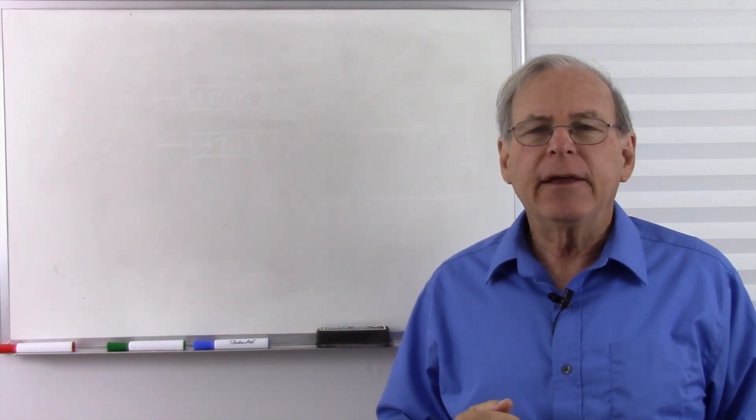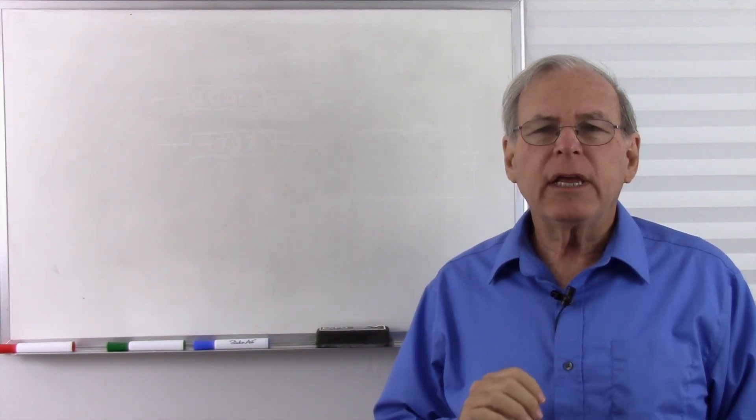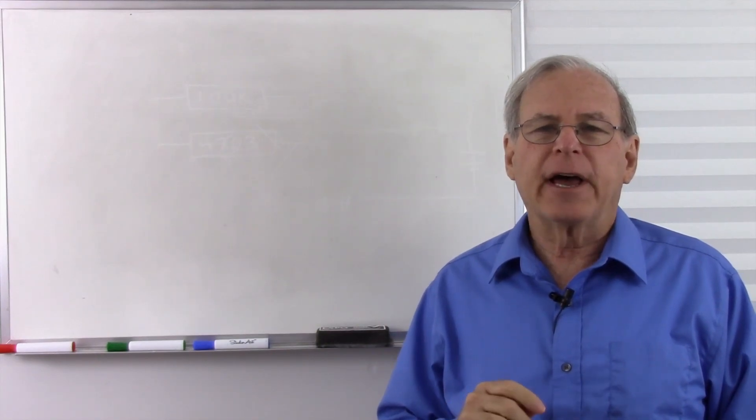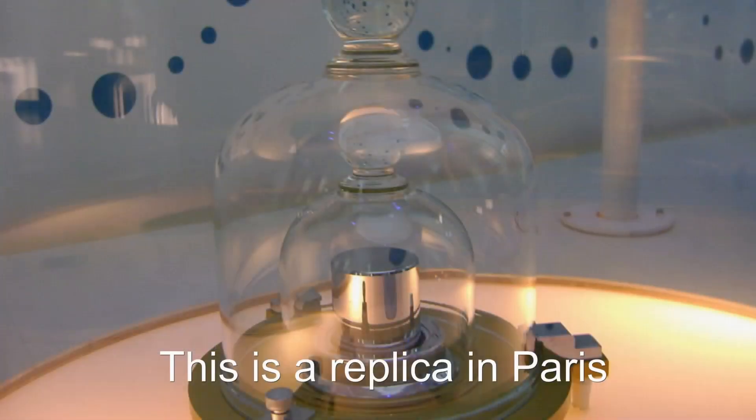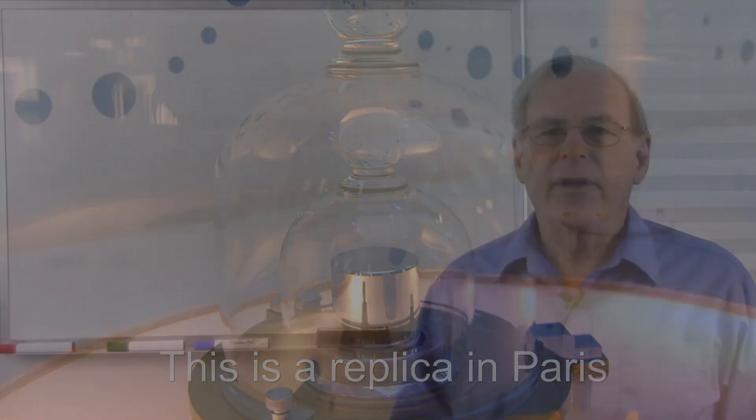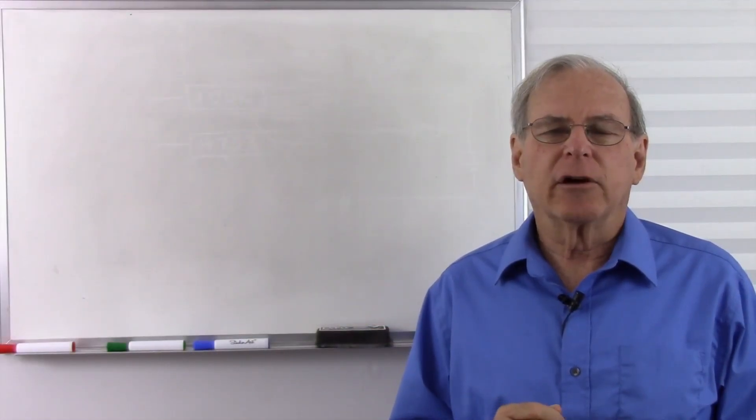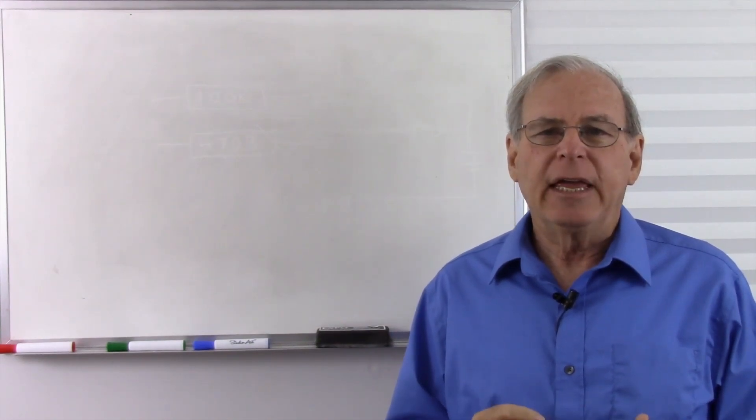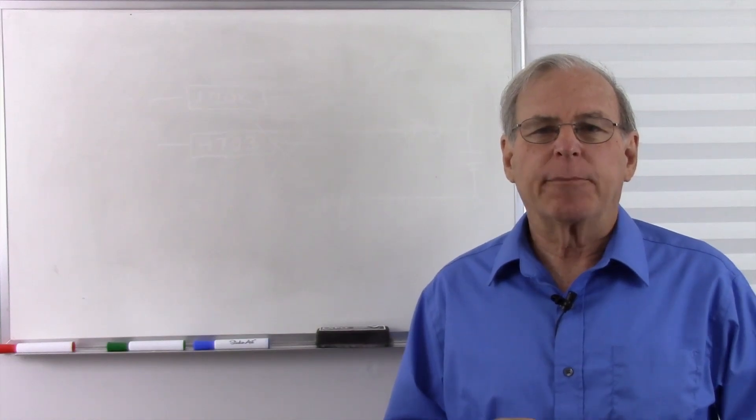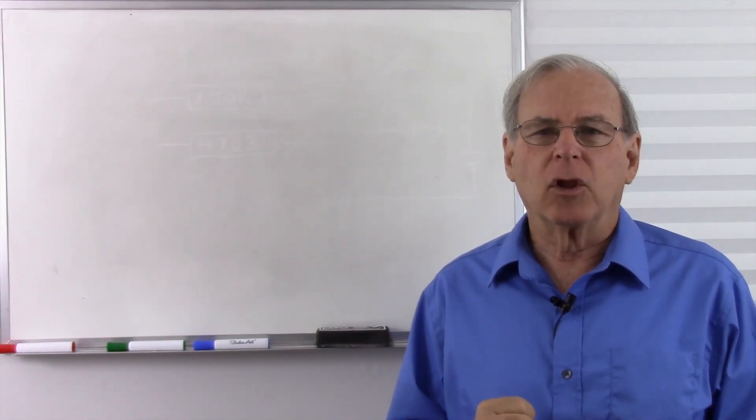So today, the kilogram is the only unit of measure that is still defined by a specific artifact, and that is a particular piece of platinum-iridium alloy that is stored in a vacuum in Serres, France. There are proposals to redefine the kilogram by methods that can be reproduced in the laboratory. The leading contender is based on the Planck constant. But today, the kilogram is still defined by that particular piece of platinum-iridium alloy in France.